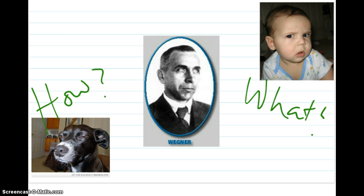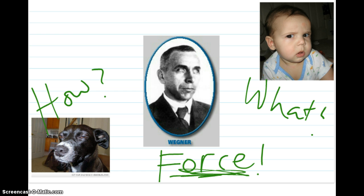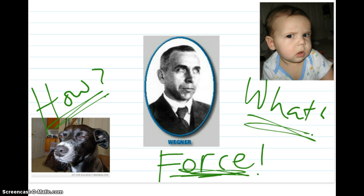How could continents that are so completely massive be moved around the globe? Scientists were thinking about what we learned about in force and motion — what kind of force could cause the movement of such large continents? That was a really good question, because Alfred Wegener didn't have the right explanation. He was saying that the continents moved because of the spin of the Earth's axis. Years later, once we developed more technology and came to the concept of seafloor spreading — which you'll learn about next — did it start to explain how the continents had moved. So his idea wasn't wrong; it was just the 'how' that he didn't really know how to explain.